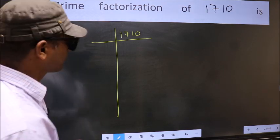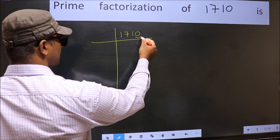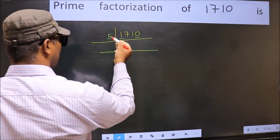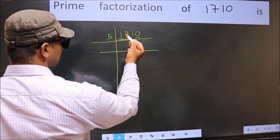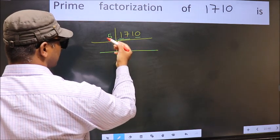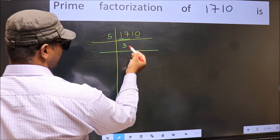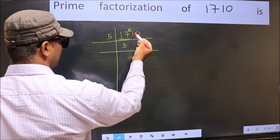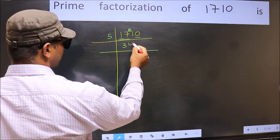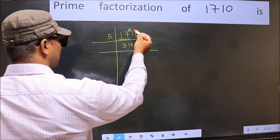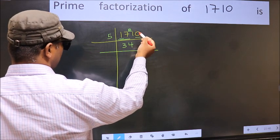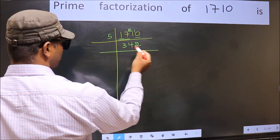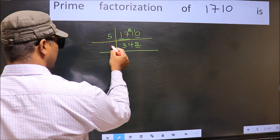Next. In this number, the last digit is 0, so take 5. The first number, 1, is smaller than 5, so take the 2-digit number 17. A number close to 17 in the 5 table is 5×3=15. 17-15=2, carry 2 forward to get 21. A number close to 21 in the 5 table is 5×4=20. 21-20=1, carry 1 forward to get 10. When do we get 10 in the 5 table? 5×2=10. So 1710 ÷ 5 = 342. Now the last digit is 2, which is even, so take 2.